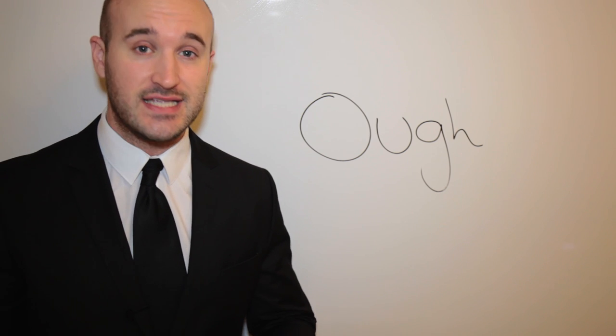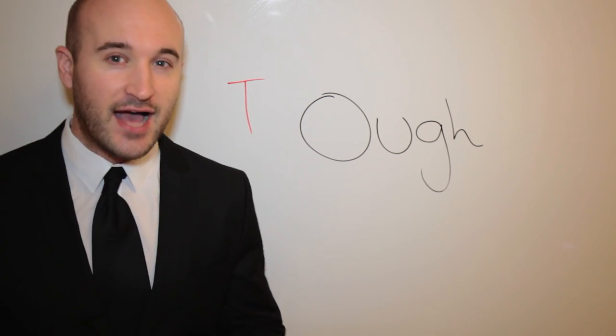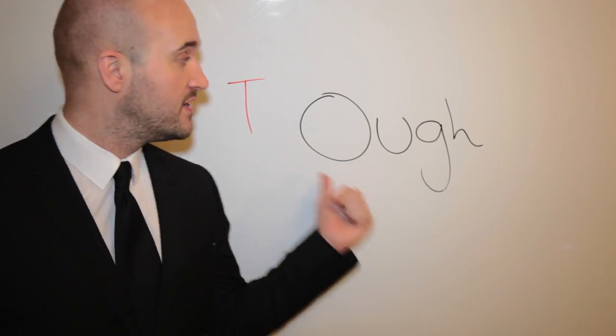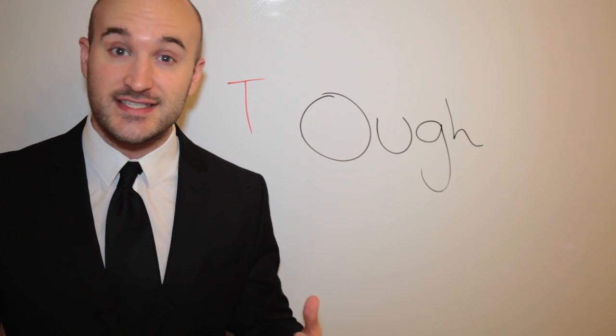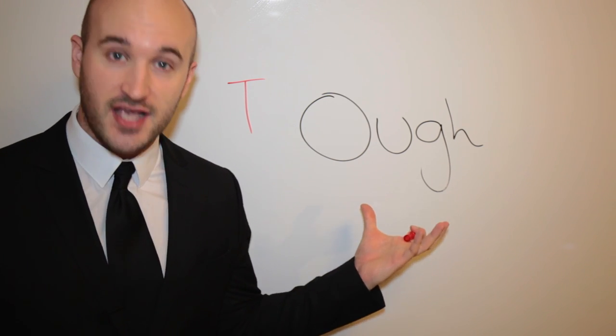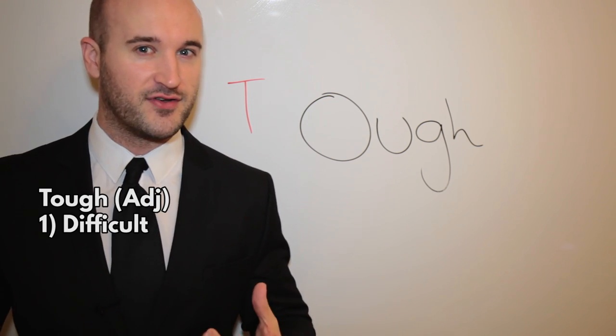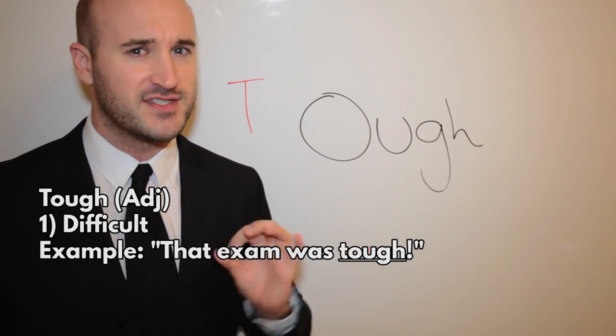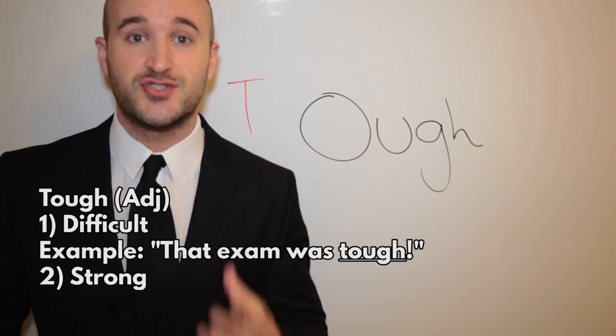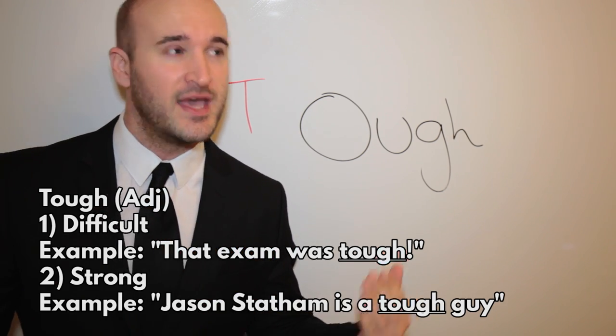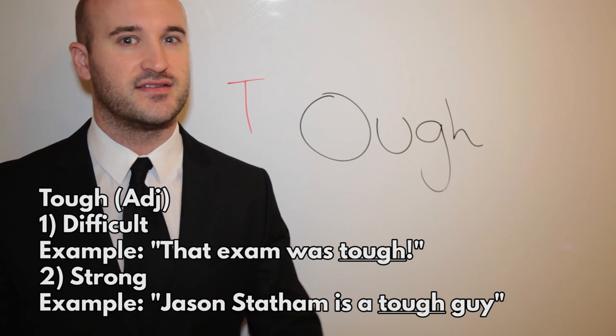Okay, let's start by putting a T at the front of the word. Now this spells tough, T-O-F-F, so in this case we pronounce it off. Tough can mean two things. One, it could mean difficult, for example, 'Oh, that exam was tough.' Or it could mean strong. Hey, do you know that guy that looks like Jason Statham? He's a tough guy. Allie isn't.